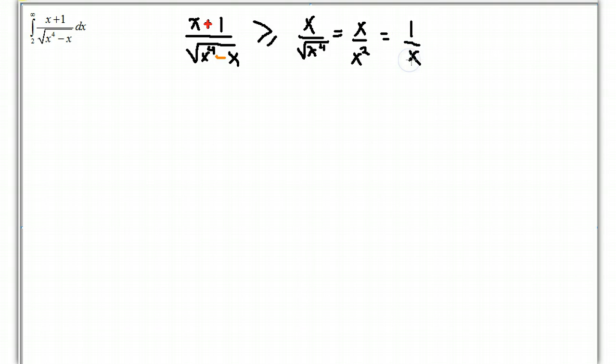So, the function that you were given is bigger, the bigger one we call f of x. The function that you were given is bigger than 1 over x, and we'll call that g of x.